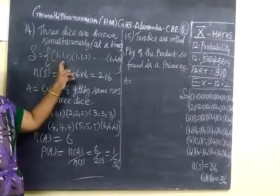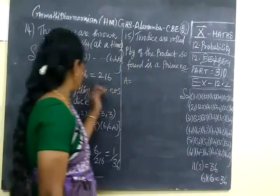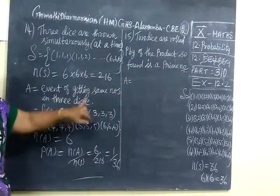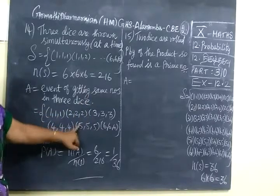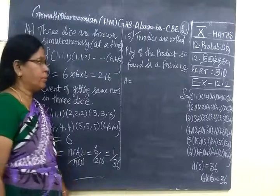We are given 3 dice. Two dice, n(S) is 6×6=36. Three dice means 6×6×6=216. Equal numbers mean there are 6 numbers, so you get an answer as 1/36.